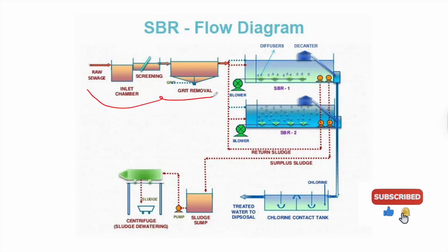Before reaching the SBR, wastewater undergoes pre-treatment. This typically includes screening to remove large particles such as branches or big stones, followed by grit removal to remove sand, grit, and other coarse material that could damage mechanical equipment like pipes and mixers.